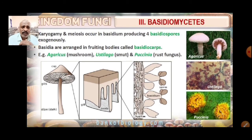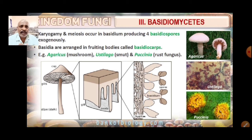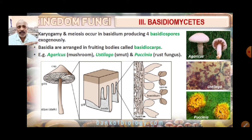Meiosis occurs in basidia, producing four basidiospores. The basidia are arranged in fruiting bodies called the basidiocarp. Examples of Basidiomycetes include Agaricus, smuts, Ustilago, Puccinia (the rust fungus), and others. Agaricus is commonly seen in daily life.